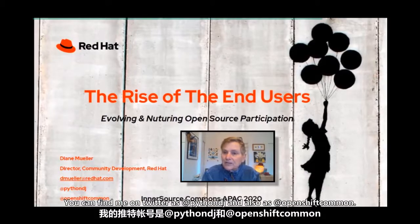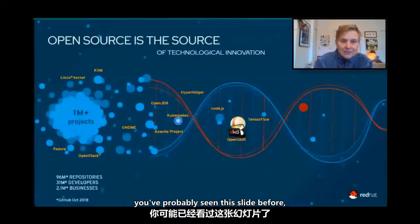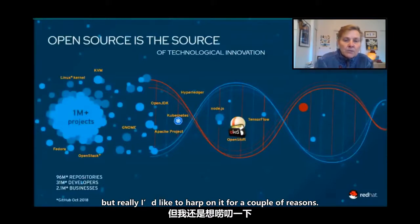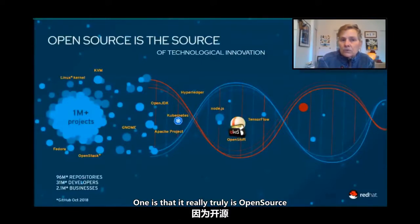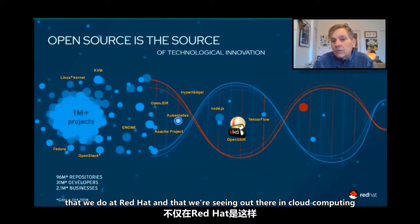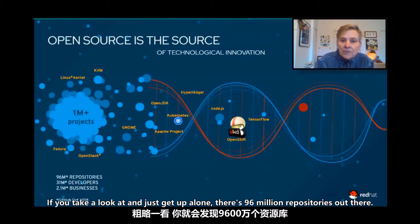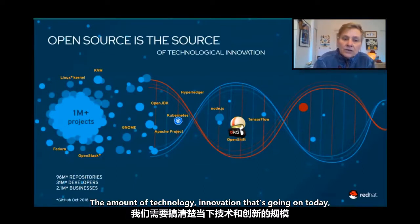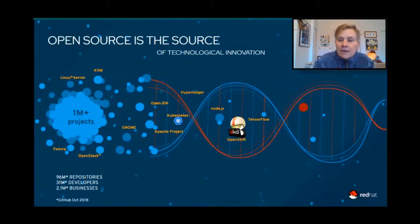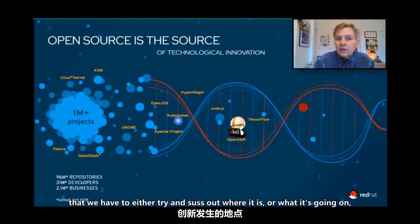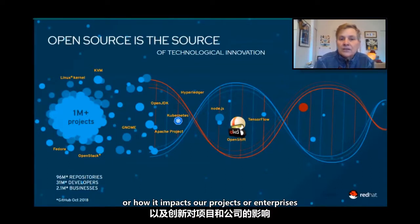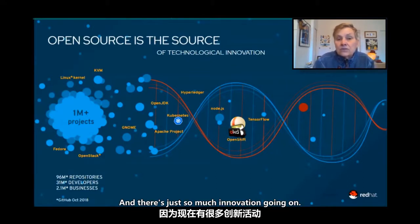You can find me on Twitter as Python DJ and also as OpenShift Commons. If you know us at Red Hat, you've probably seen this slide before, but I like to harp on it because open source is truly the source of all the technology innovation that we do at Red Hat and that we're seeing in cloud computing and lots of other spaces. If you take a look at just GitHub alone, there are 96 million repositories out there — the amount of innovation going on is really phenomenal.